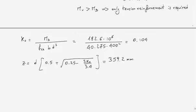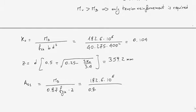Now that I know the value of the lever arm, I can use an equation derived from the equilibrium of internal and external moments to find the area of reinforcement in the tension zone required. The area of reinforcement As₁ equals the design moment divided by 0.87·fyk·z, which is 182.6×10⁶ Nmm divided by 0.87×500×359.2.